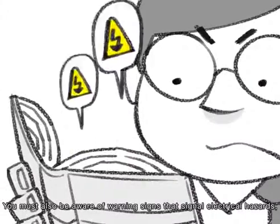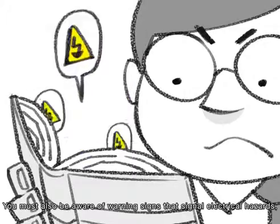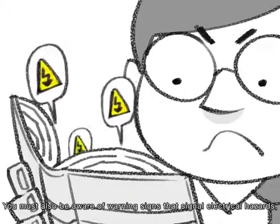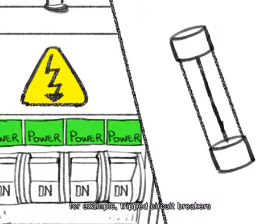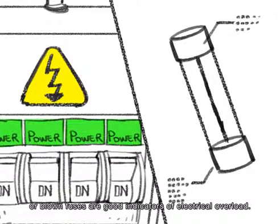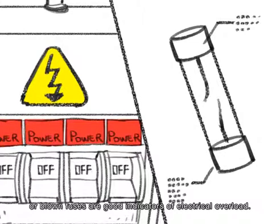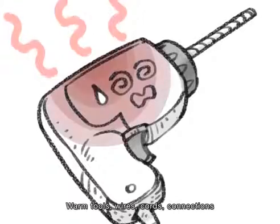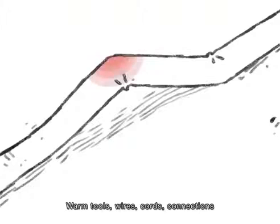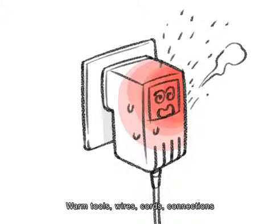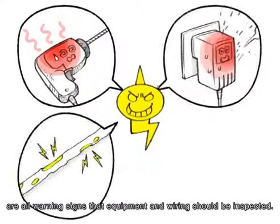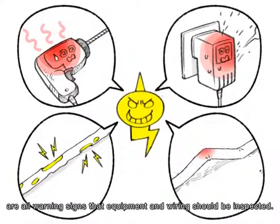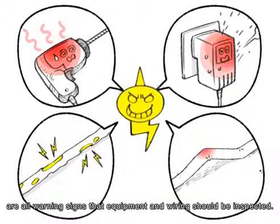You must also be aware of warning signs that signal electrical hazards. For example, trip circuit breakers or blown fuses are good indicators of electrical overload. Warm tools, wires, cords, connections and worn insulation around wires and connections are all warning signs that equipment and wiring should be inspected.